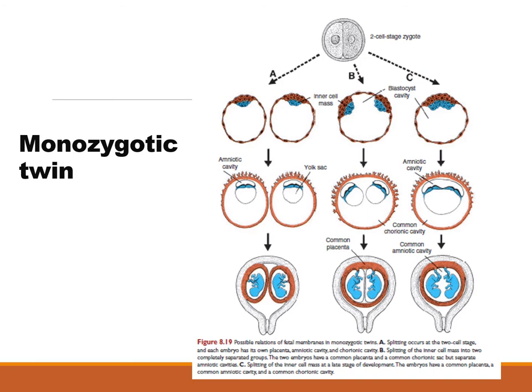A rarer case is shown in figure C, where the zygote splits at a much later stage in development. As a consequence, the embryo ends up with a common placenta, a common amniotic cavity, and a common chorionic cavity. Because they share a common amniotic cavity, the chances that the umbilical cord will twist around the other twin or even itself are higher. This type of pregnancy requires close monitoring.